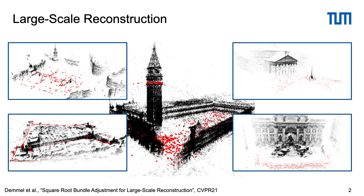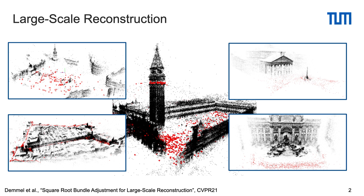In this work we consider the application of sparse 3D reconstruction from unordered image sets, such as these city scenes with thousands of cameras shown in red and millions of points shown in black. One essential building block is bundle adjustment, and our goal is to make this step faster and more numerically stable.